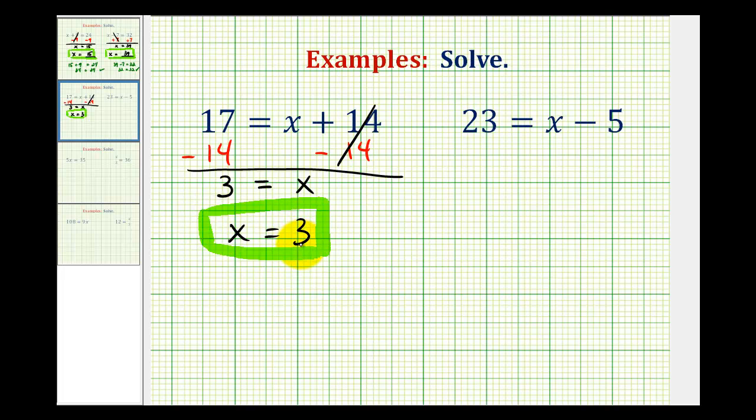This means if we substitute 3 for x, it should satisfy the original equation. Let's check this. Looking at the original equation, we want to make sure 17 = 3 + 14. Well, 3 + 14 = 17, therefore our solution is correct.